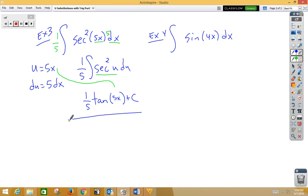In example 4, inside function u is 4x, so du, derivative, would be 4dx. We don't have a 4dx, so if we multiply by 4 on the inside, multiply by 1 fourth on the outside, we get 1 fourth integral sine of u du.